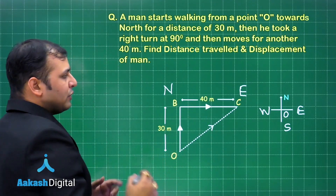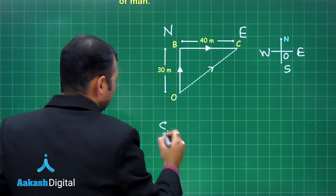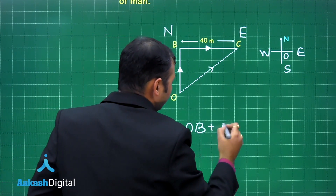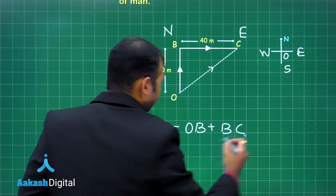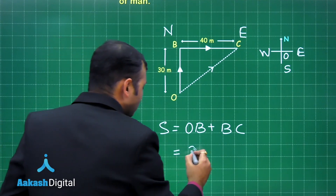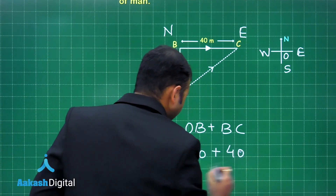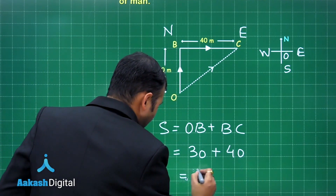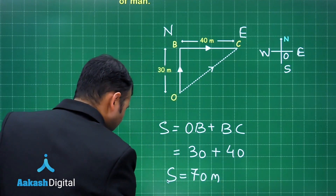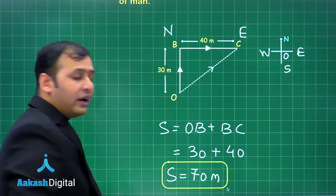To find the distance, it is the sum of the path from O to B and then from B to C — that is the path length. So that equals 30 meters plus 40 meters, which is 70 meters. This is the distance.